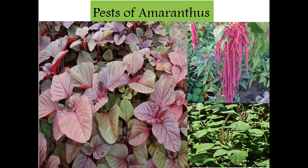Point to remember that the economic part of Amaranthus is the leaf, also used for human and animal consumption. The problem is to control the pest and disease, and the use of chemicals should be minimized for safety. At the same time it must control the pest. Contact insecticides are mostly used to control pests in the case of leafy vegetable crop production. Till now, Malathion is recommended for control of pests in Amaranthus.